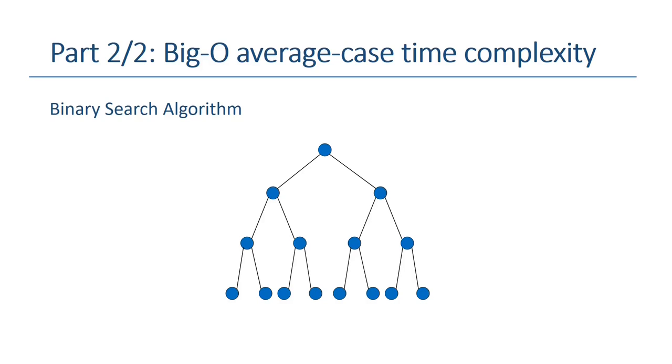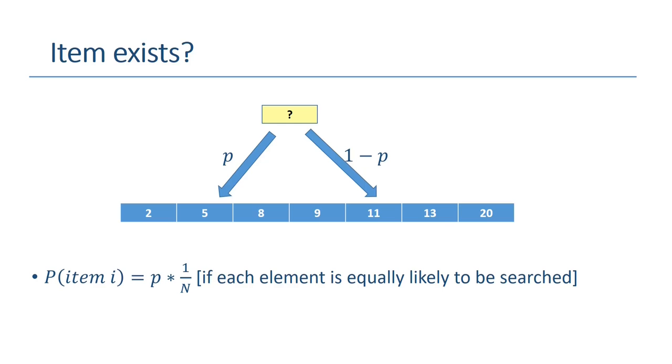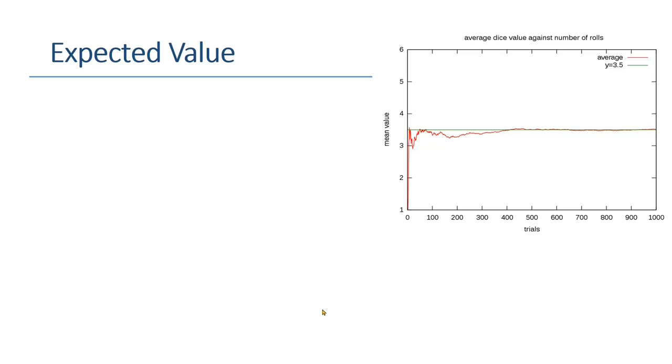The second part is to determine the big O order of the binary search for its average case time complexity. Finding the average case can be a bit tricky. The average case means an item can exist anywhere in the array or does not even exist. In this case, item 5 exists and item 12 does not exist. Let's say the probability for an item to exist in an array is p and 1 minus p for vice versa. If the item exists and it is equally likely to be searched, then its probability would be p times 1 over n.